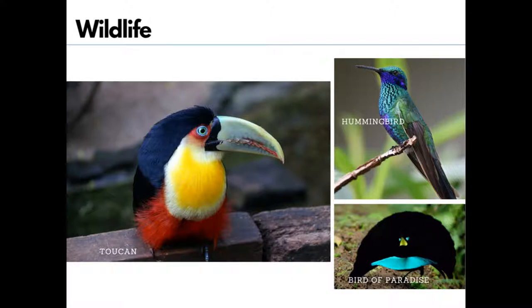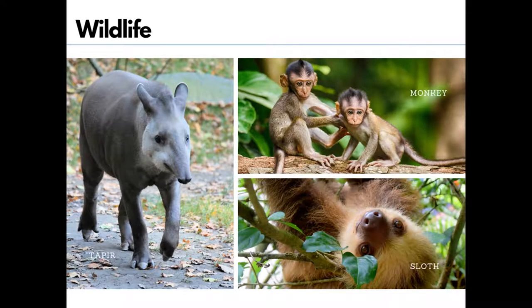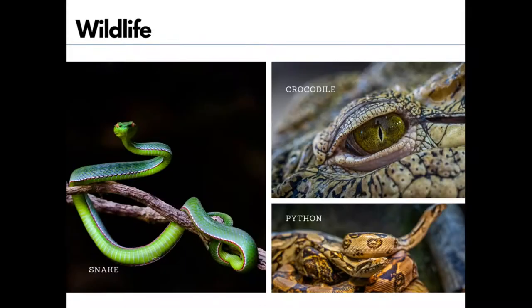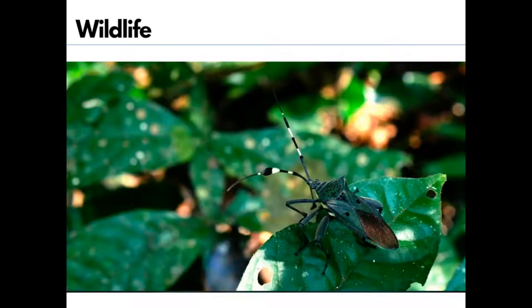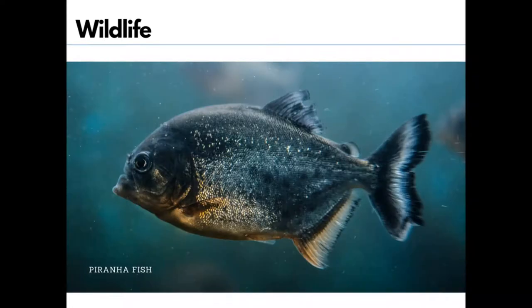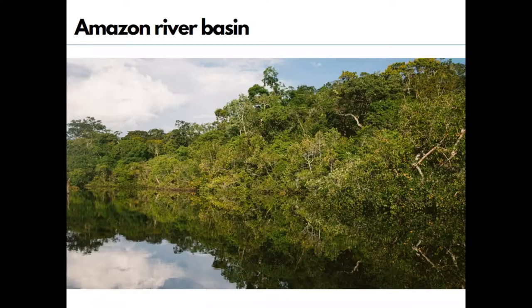Birds like hummingbirds and birds of paradise have brilliantly colored plumage — plumage is a layer of feathers — and an oversized bill, making them very different from the birds we see in India. These forests also have animals like sloths, monkeys, and anteaters, as well as reptiles like crocodiles, snakes, pythons, anacondas, and boa constrictors. The forest is home to thousands of species of insects, and the river has flesh-eating piranha fish.